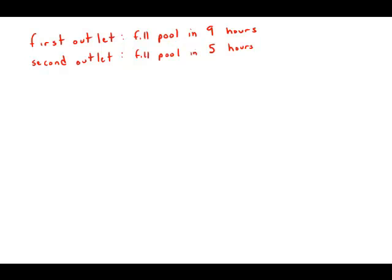So what we need to know here is that we need to change these numbers to rates. And the reason we need them as rates is because we can add rates. So rate number one, the rate of the first outlet, that is one pool in 9 hours. So I'm just going to write these rates in units of pools per hour since those are the units given to us.